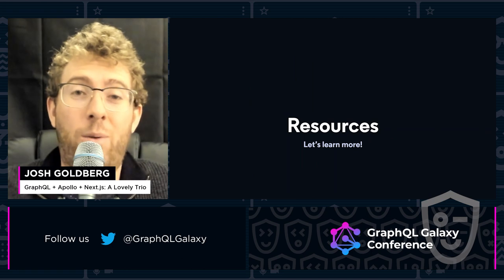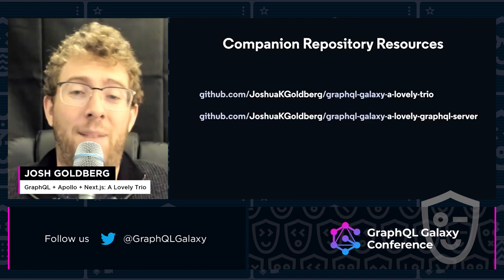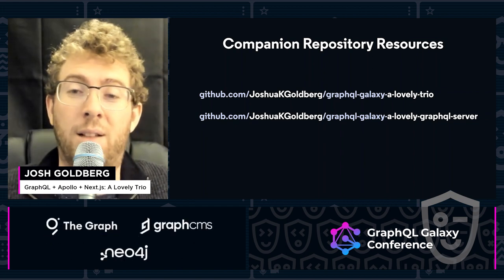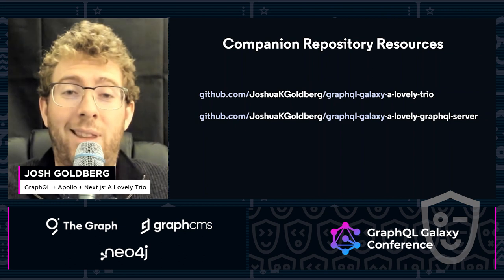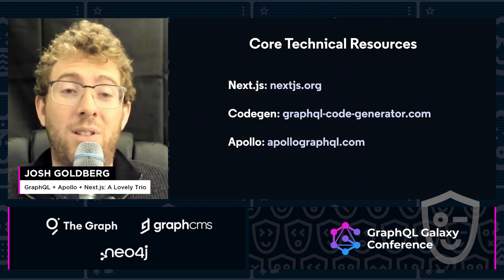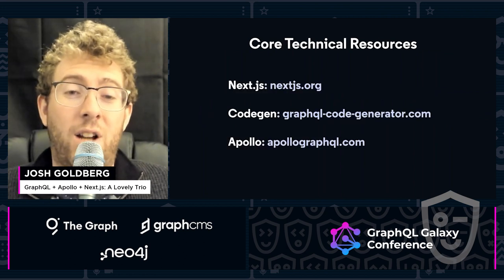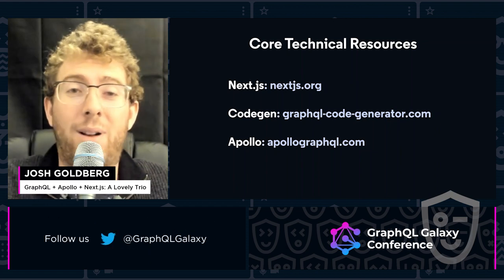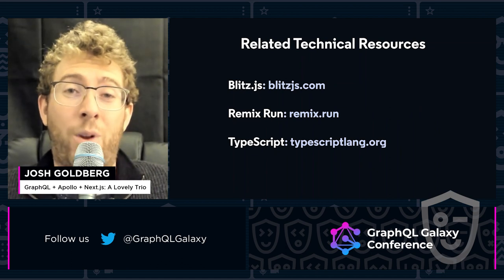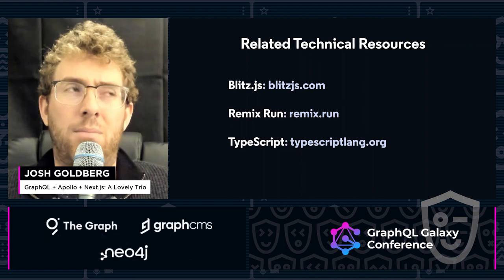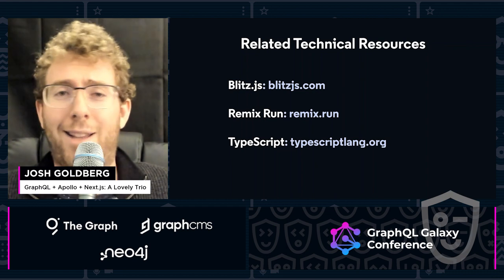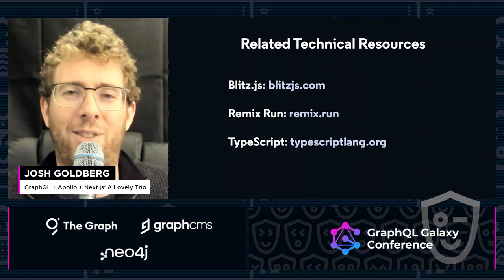Let's talk a little bit about where you can go to see more information. I have all these things and a little bit more in the companion repositories: GraphQL Galaxy a lovely trio and a lovely GraphQL server. The core technical resources: nextjs.org, graphqlcodegenerator.com, and apollographql.com are all excellent. If you want to see some cool additions, Blitz.js is a framework that builds on top of Next.js, and Remix Run is somewhat of a competitor to Next.js that came out open source recently. And my favorite: typescriptlang.org — just a great language to write your stuff in.